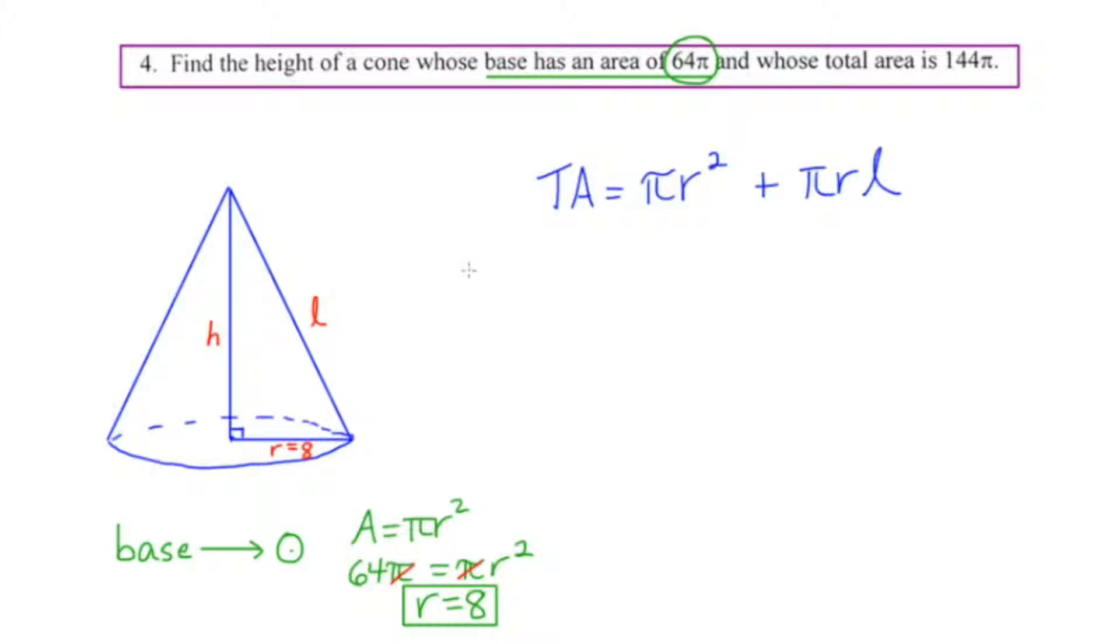So the total area is 144π. That's given to us at the end of the question. Now, this represents the base area right here, and we know that the base area is 64π. We know that the radius of the circular base is 8, which means there's only one thing left that I could possibly find, and that is the slant height. So let's see what we really have,